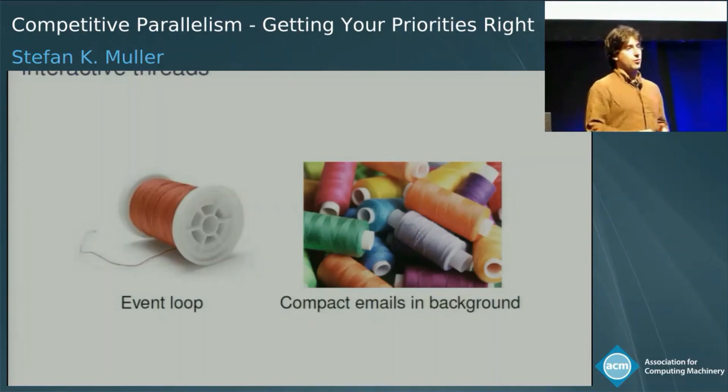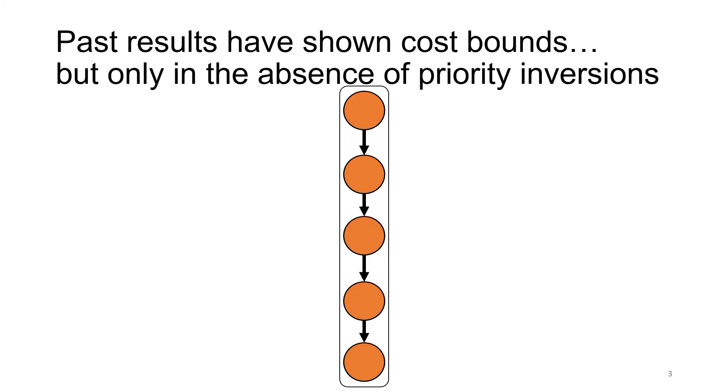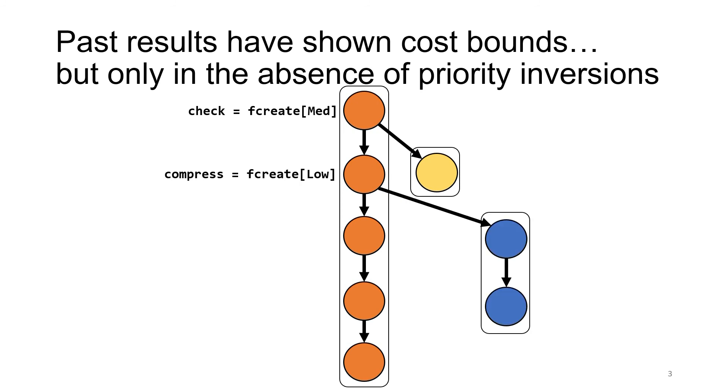This prior work extended futures with priorities, allowing programmers to specify using the future create, or fcreate, keyword annotated with a priority, that a particular computation should happen in parallel with the rest of the program, thus spawning a new lightweight thread or future at that priority. When the results of the future are needed in either the main thread or another part of the program, they can be retrieved with future touch, or ftouch, which waits for the future to complete and returns its value. For clarity, I'm outlining with black rectangles pieces of the program that logically belong to the same thread. In later parts of the talk, I'll drop these boxes when they're not necessary for understanding.